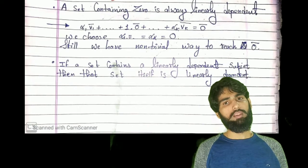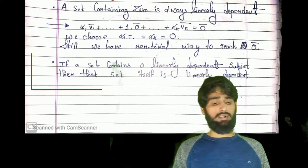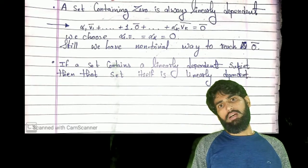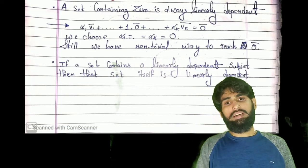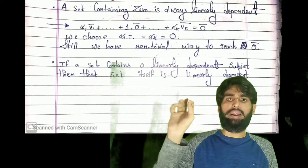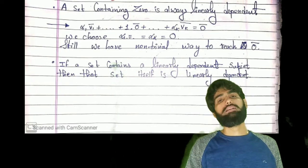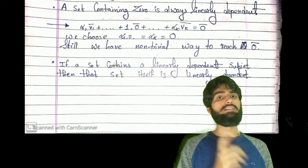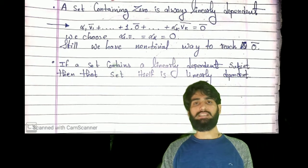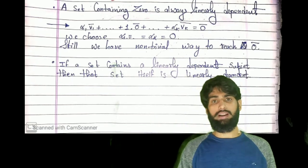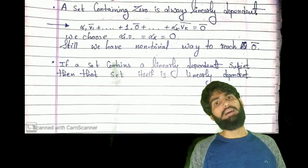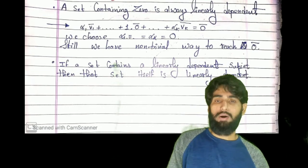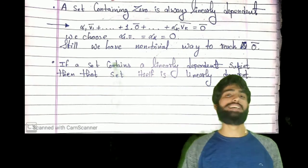The third result: if a set contains a linearly dependent subset, then that set itself is linearly dependent. Suppose I have a bigger set inside which there exists a smaller linearly dependent set; then the entire bigger set becomes linearly dependent. The proof can be done in a similar pattern as the first result, so I leave this as an exercise. Thank you so much for watching. If you like it, please comment your feedback, share it with your friends, and subscribe to my channel.